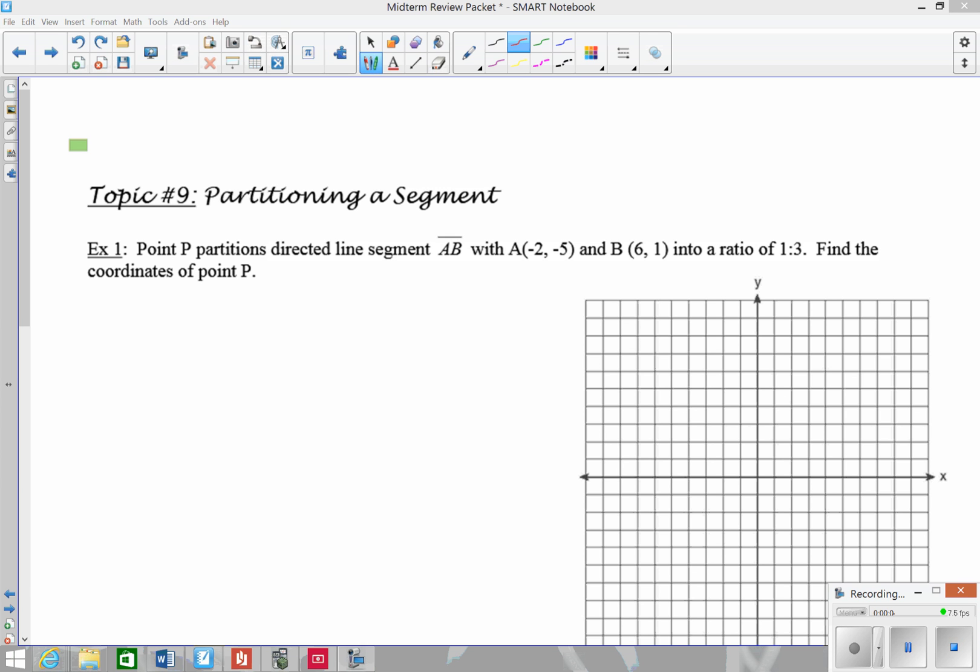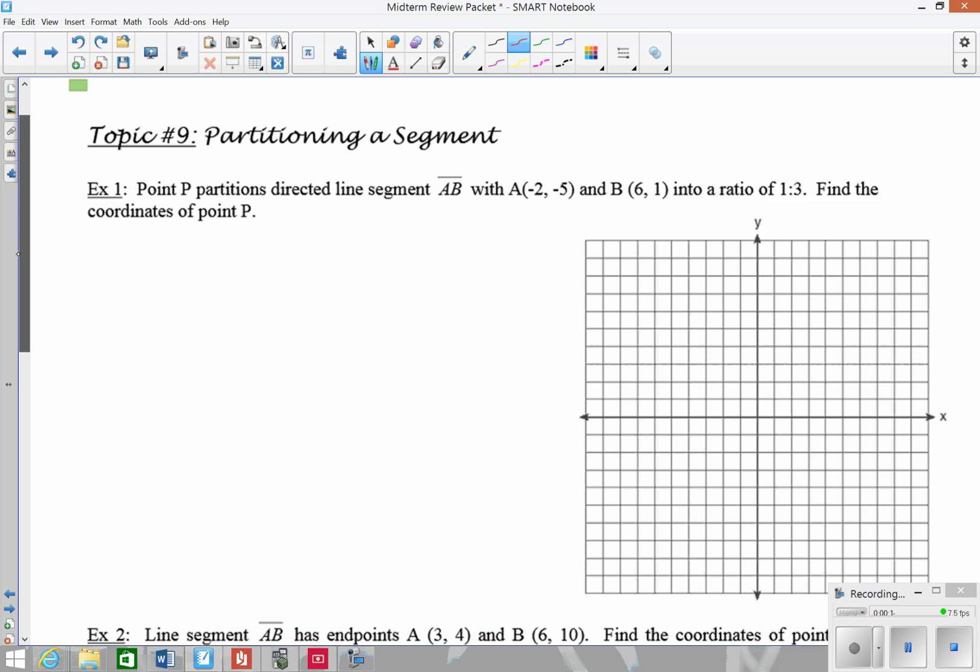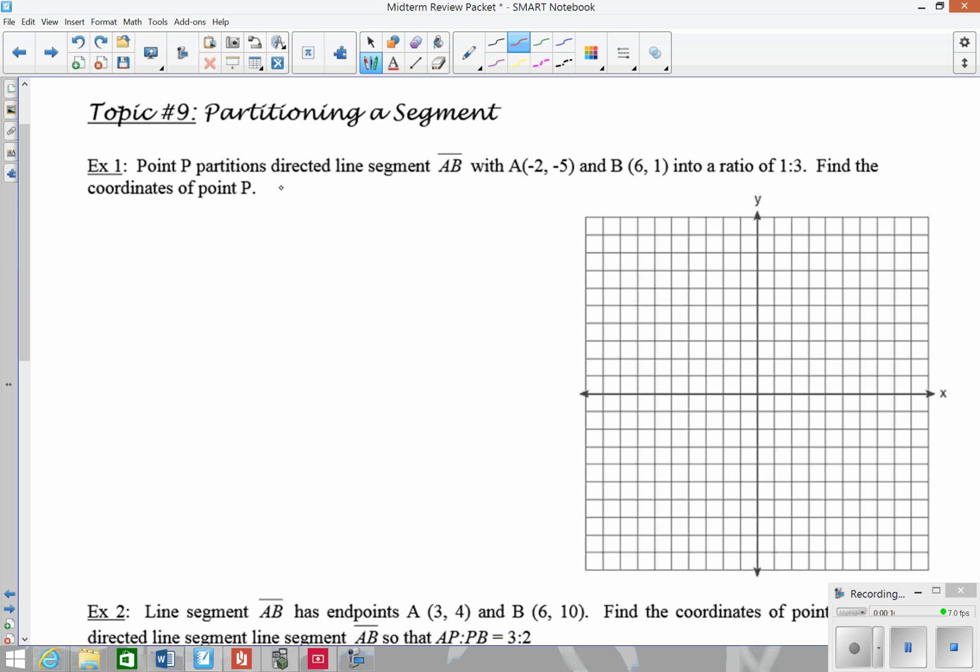In topic 9, we're going to look at how to partition a segment. Partitioning a segment basically means we can divide a segment into different pieces. If you look at this example here, point P partitions line segment AB with these endpoints into a ratio of 1 to 3. That means we need to take this segment and break it up into a ratio of 1 to 3.